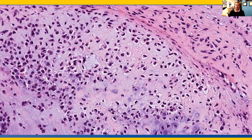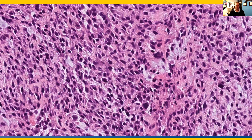Various areas show more cartilaginous differentiation, and perhaps some viewers were thinking about a high-grade chondrosarcoma. High-grade grade 3 chondrosarcomas are quite rare and are generally not this anaplastic or this cellular, and of course would not be producing bone. Other areas of this tumor were more spindle cell sarcoma-appearing and mitotically active.